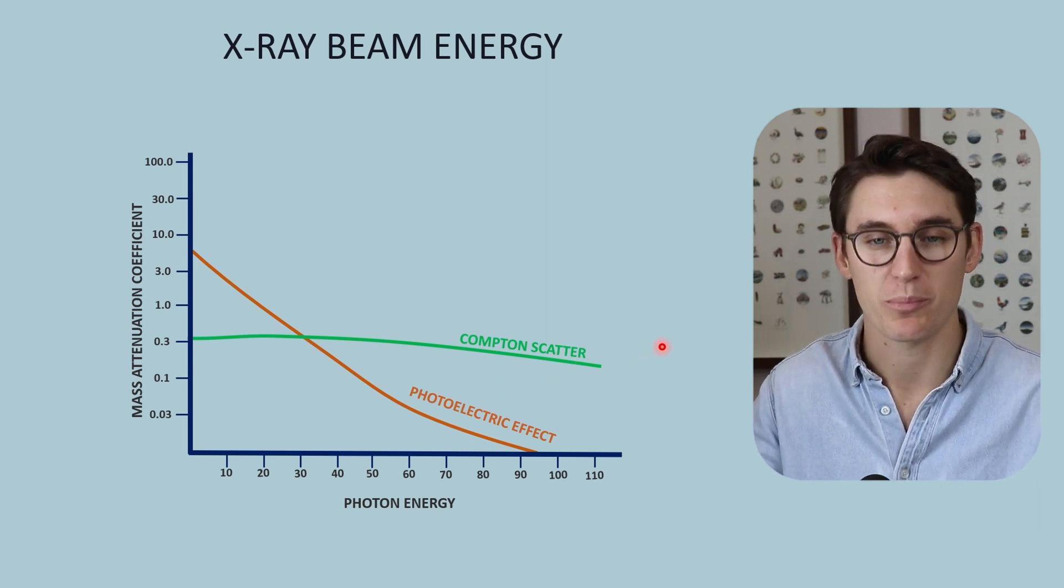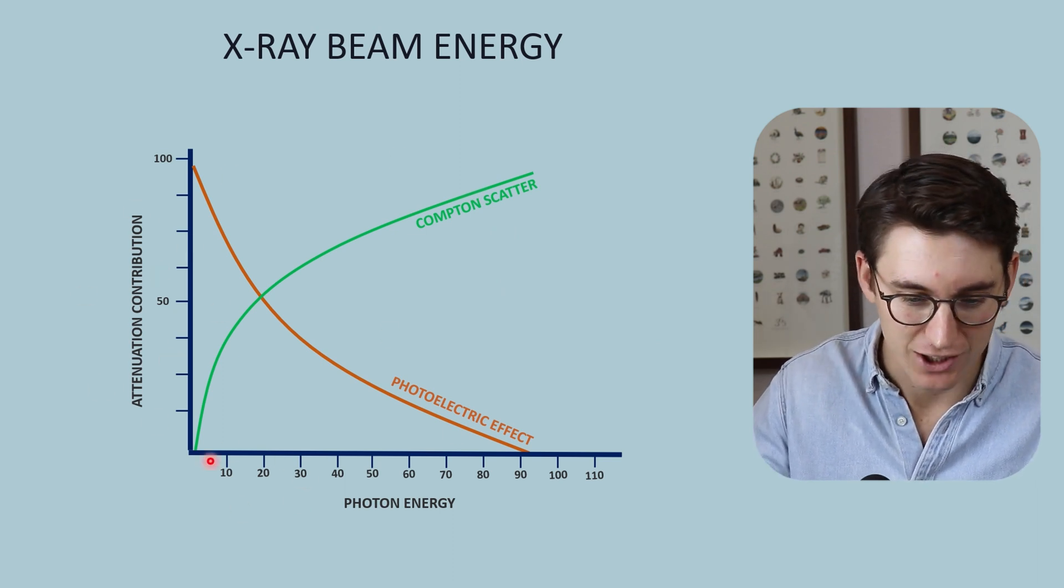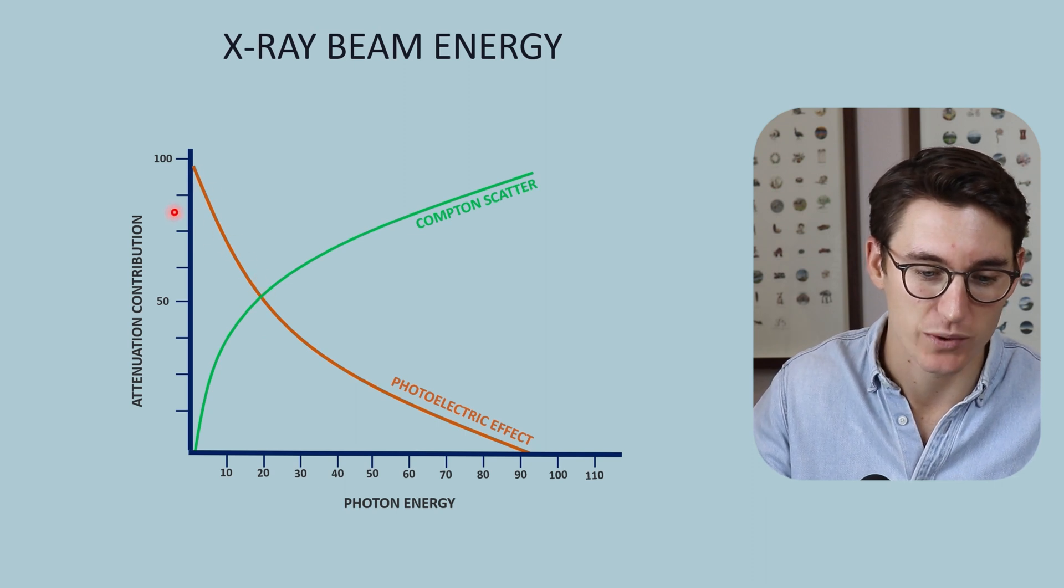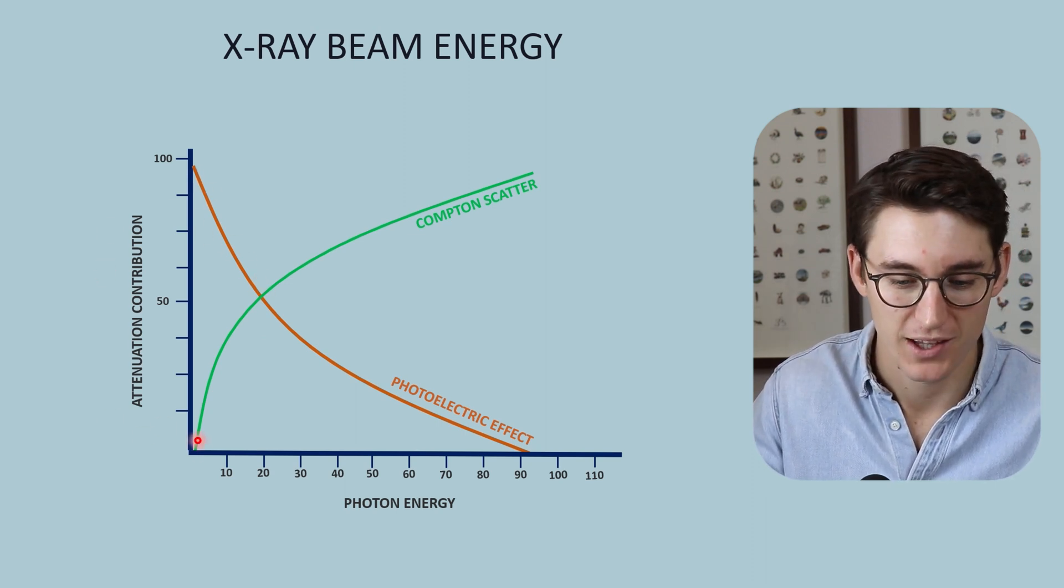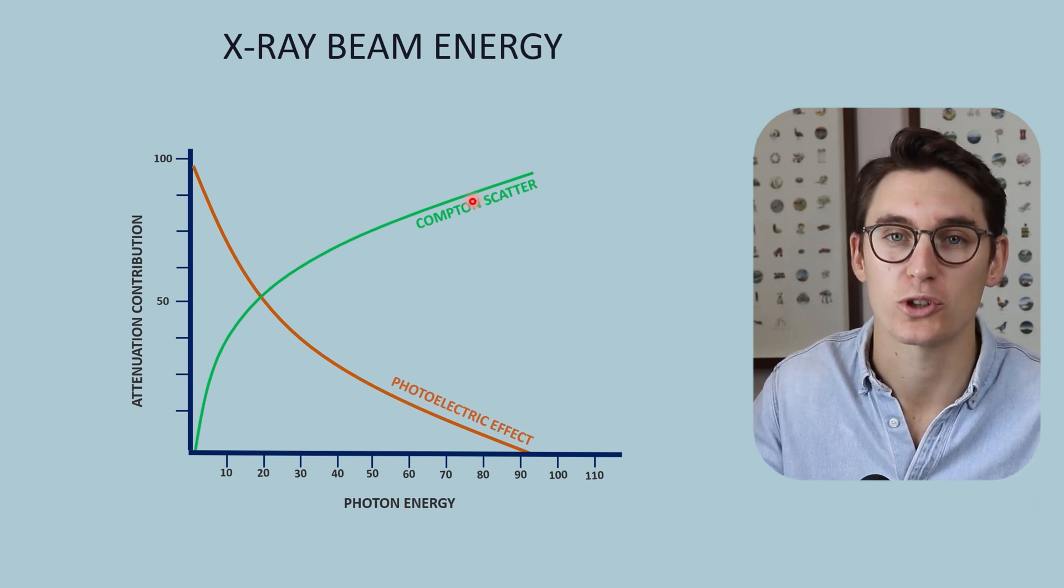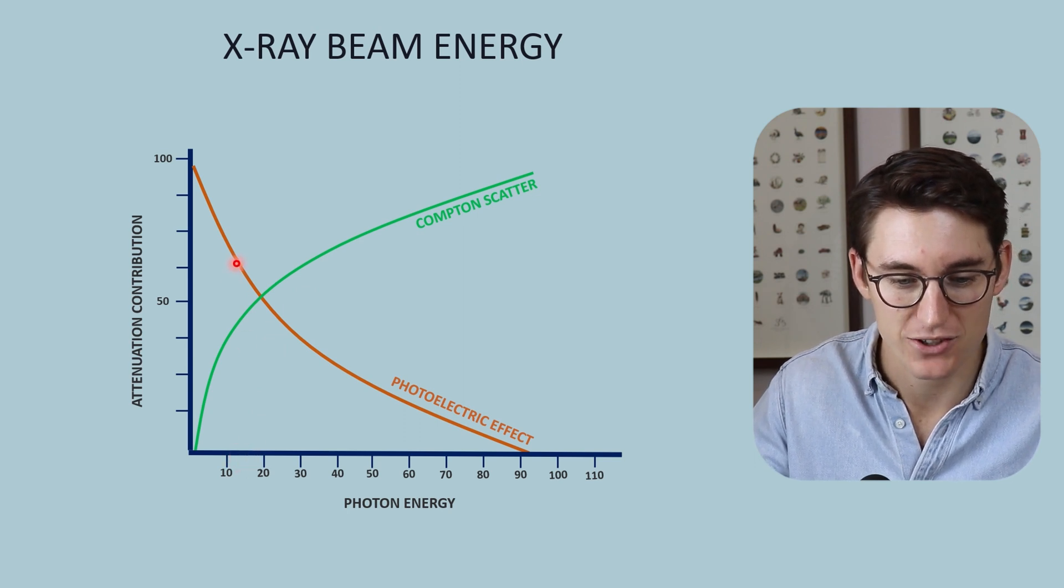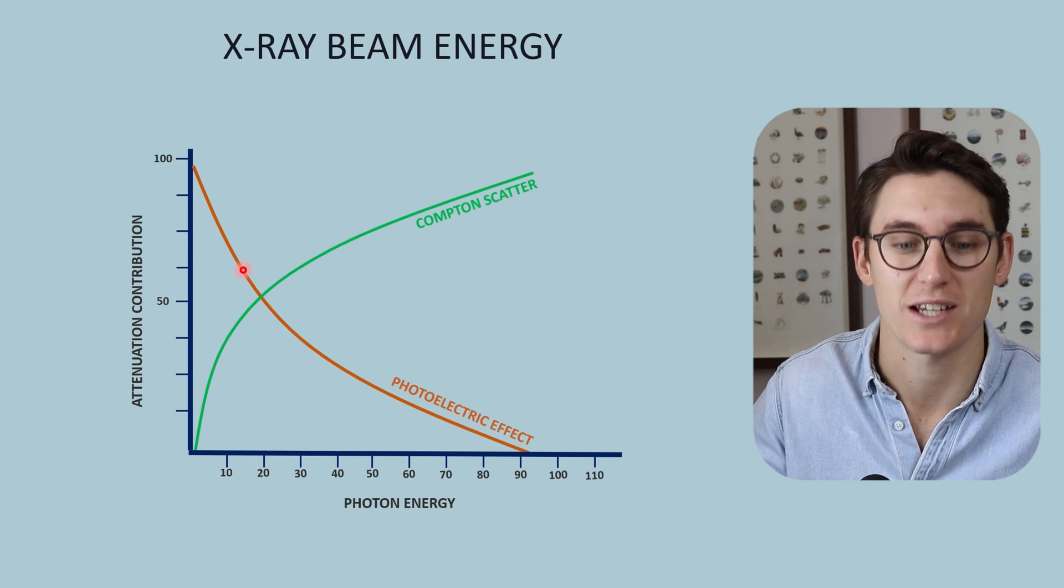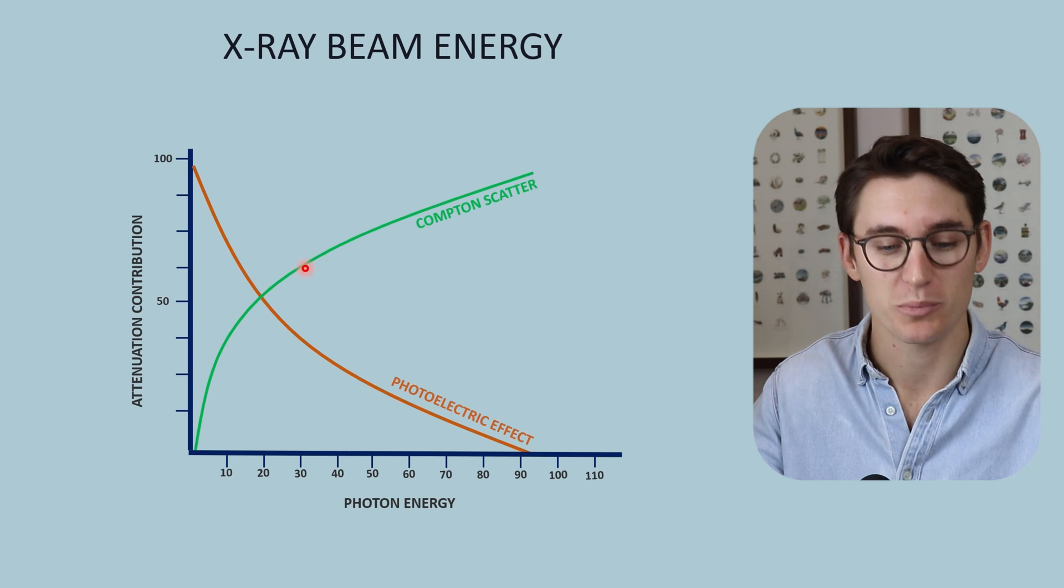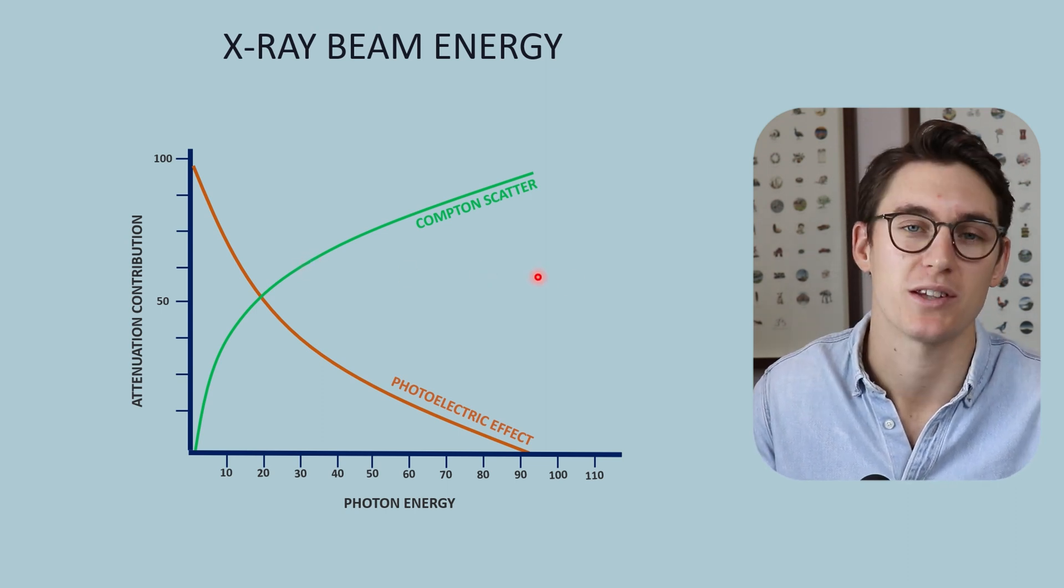Now another way to represent this is percentage contribution to attenuation. At low photon energies, the photoelectric effect predominates when it comes to attenuation. As we get to higher photon energies, we get more and more Compton scatter proportionally. You can see here at say 15 keV, the photoelectric effect contributes to about 60% of our image. If we just go to 30 keV, that is completely switched. Compton scatter is now contributing to about 60% of the attenuation within the patient.